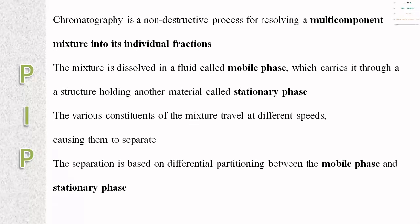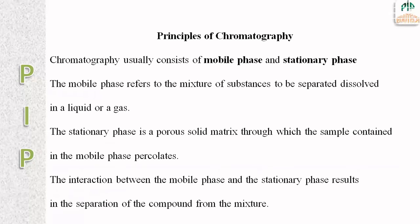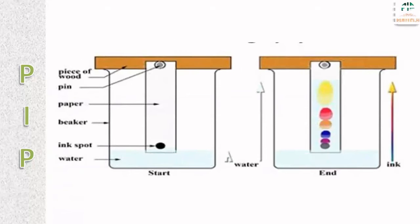The mobile phase carries the mixture through a structure holding another material called the stationary phase. The separation of the various components occurs because they travel at different speeds, causing them to separate. The separation of mixture components is based on differential partition between the stationary phase and the mobile phase.